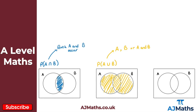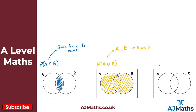Finally, the last bit of notation you need to be familiar with for probability and Venn diagrams is the complement. Let's say we're looking for the probability of B complement. The complement is represented by this little dash, and the probability of B complement is the same as 1 minus the probability of B.